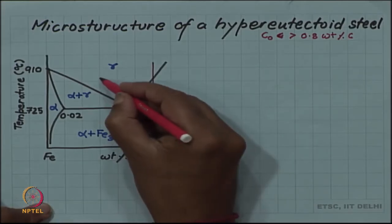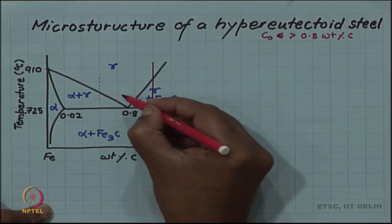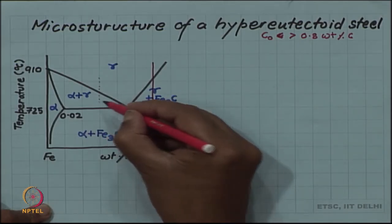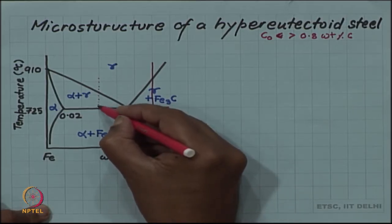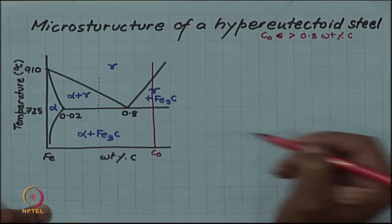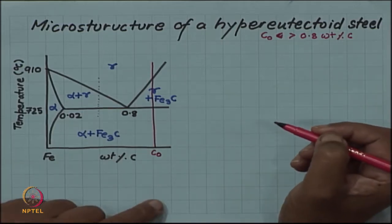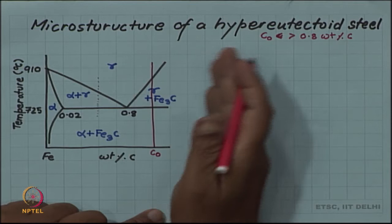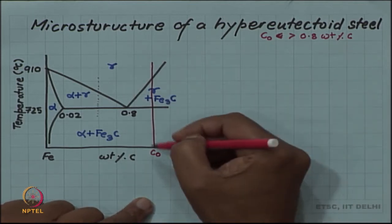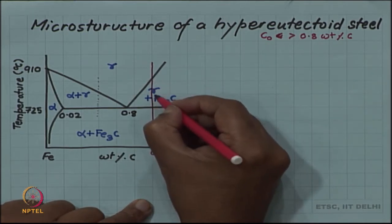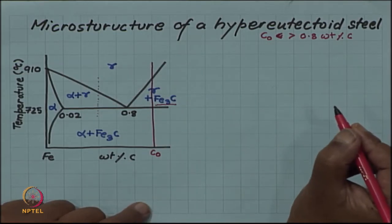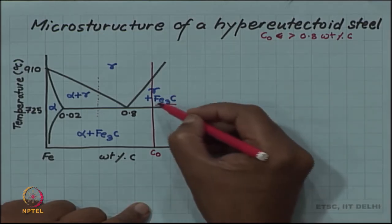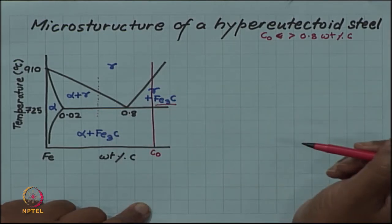We saw in the evolution of hypoeutectoid steel that austenite first became alpha plus gamma, which means ferrite first formed, and that ferrite we called hypoeutectoid ferrite. Then the remaining austenite transformed to pearlite, alpha plus Fe3C. Identical situation happens here with hypereutectoid steel, only the first phase to form before eutectoid reaction is now Fe3C cementite and not ferrite.